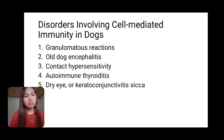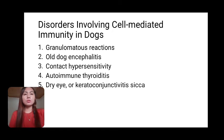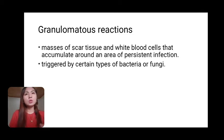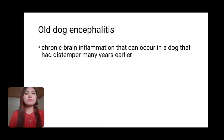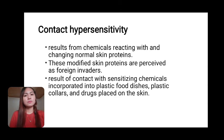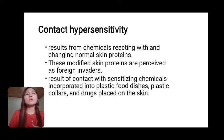Disorders involving cell-mediated immunity in dogs has four types: granulomatous reactions, old dog encephalitis, contact hypersensitivity, autoimmune thyroiditis, dry eye, and keratoconjunctivitis sicca. A granulomatous reaction is a mass of scar tissue and white blood cells that accumulates around an area of persistent infection, triggered by certain types of bacteria or deep fungi. Old dog encephalitis is a chronic brain inflammation that can occur in a dog that had distemper many years earlier. Contact hypersensitivity results from a chemical reacting with and changing normal skin proteins, perceived as foreign invaders; it results from contact with sensitizing chemicals in plastic food dishes, plastic collars, and drugs placed on the skin.